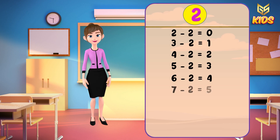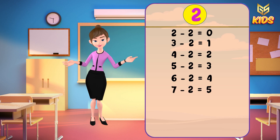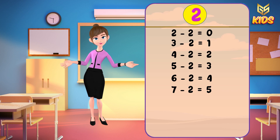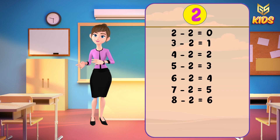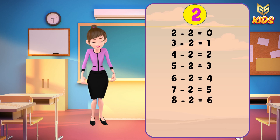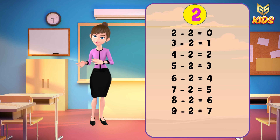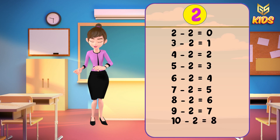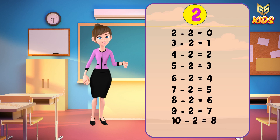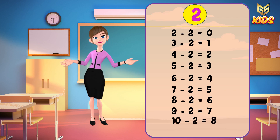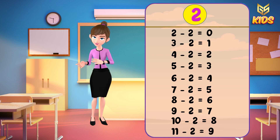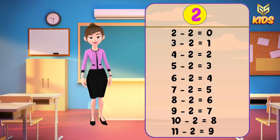7 minus 2 is equal to 5, 8 minus 2 is equal to 6, 9 minus 2 is equal to 7, 10 minus 2 is equal to 8, and 11 minus 2 is equal to 9.